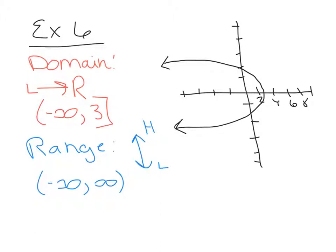You might be wondering why one end is negative infinity and the other is positive infinity when they look like they're going the same direction. For x they are the same direction, but for y they are not — y is vertical. This side goes down into negative y's, and this side goes up into positive y's. So the range is negative infinity to positive infinity.